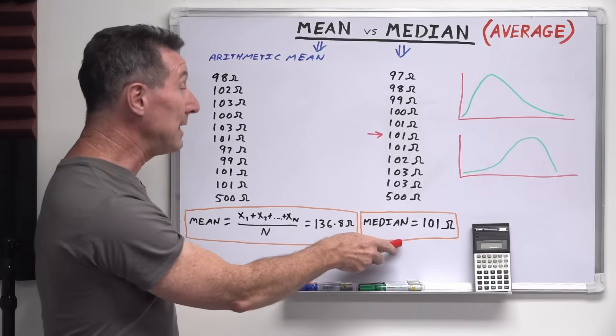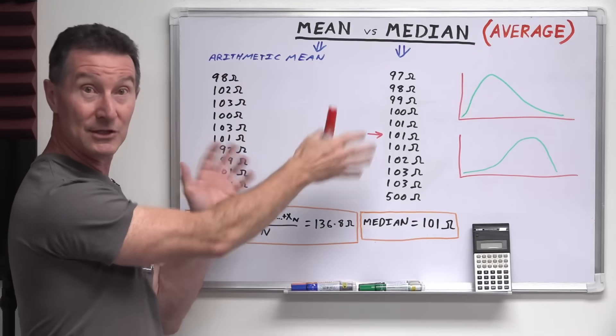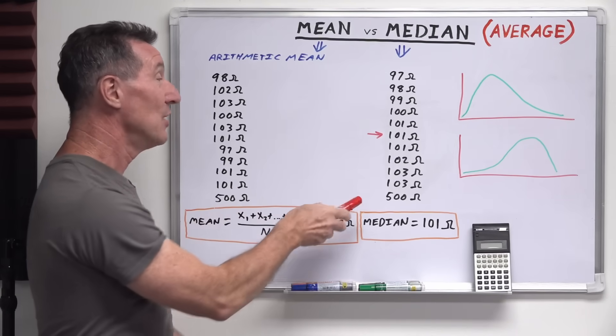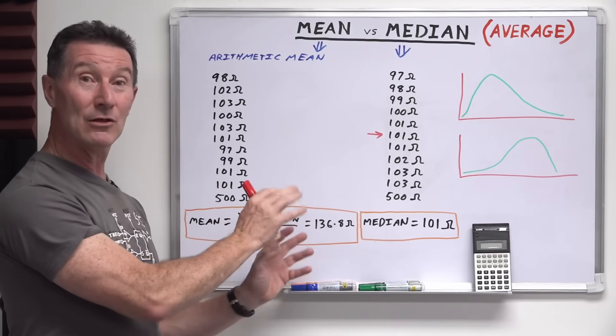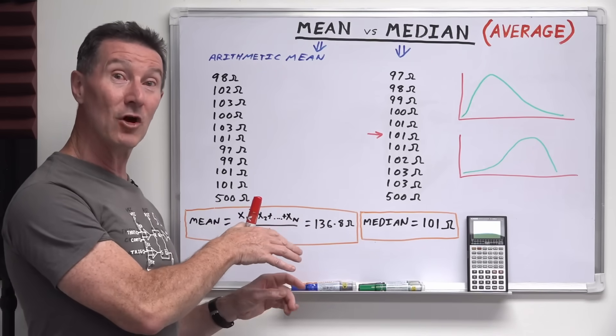Now in some cases the median might be exactly the same as the mean, because that's just the way the data happens to work out. But in those particular cases you won't really have any major outliers. So if you've got any good examples of mean versus median, leave it in the comments down below.